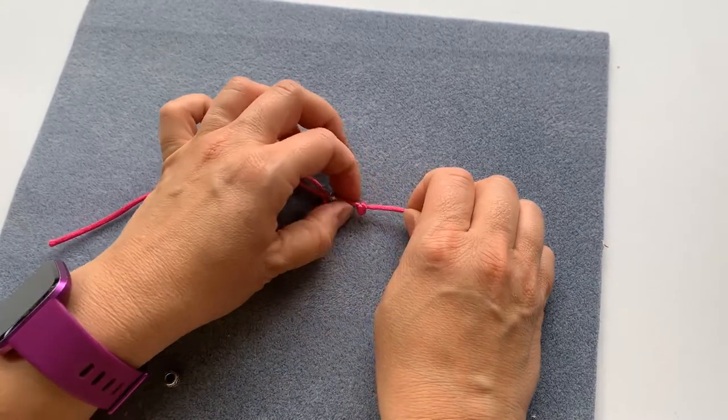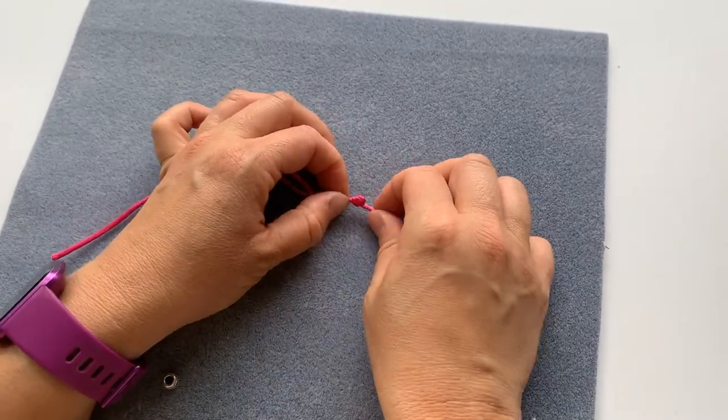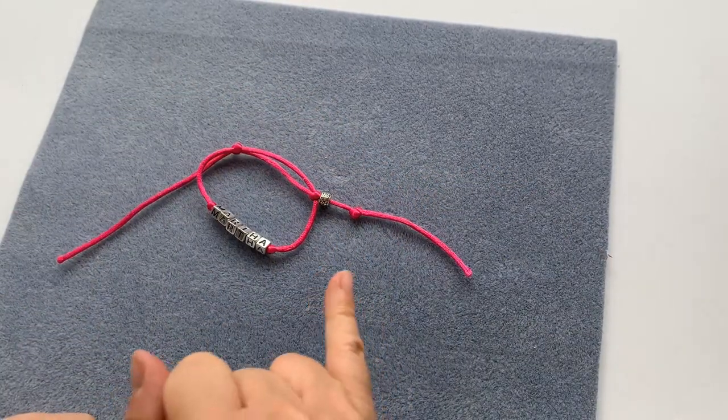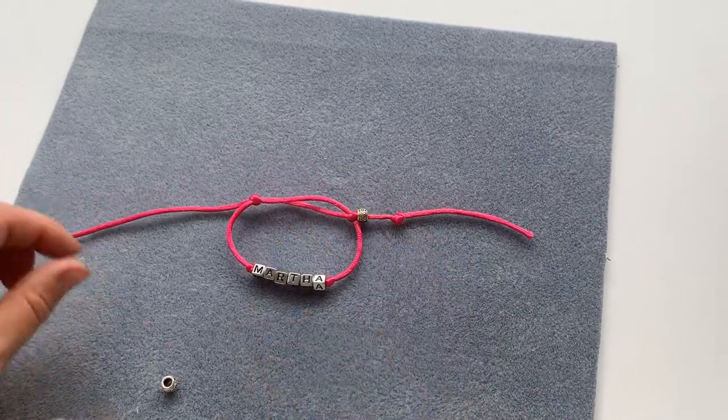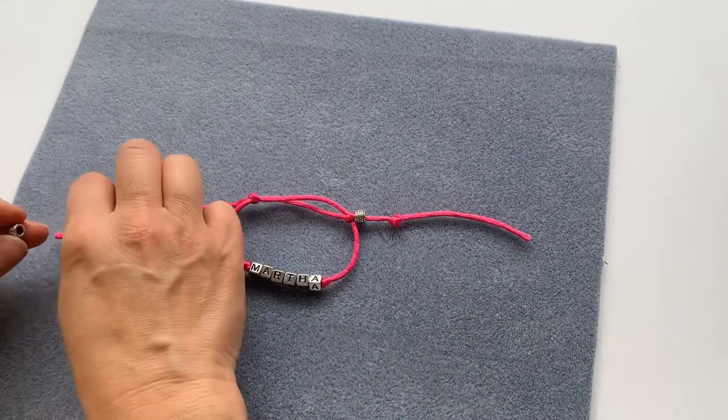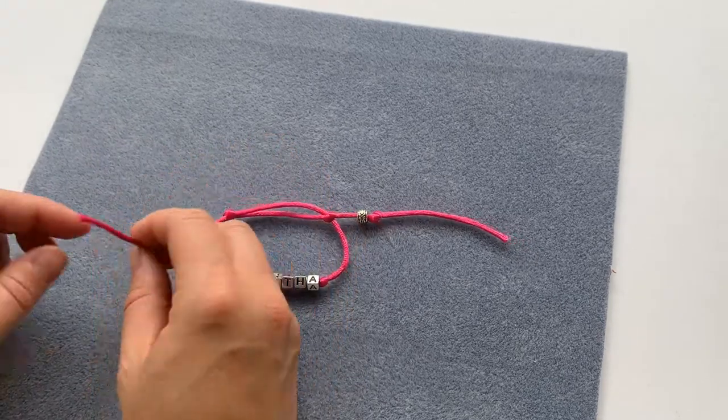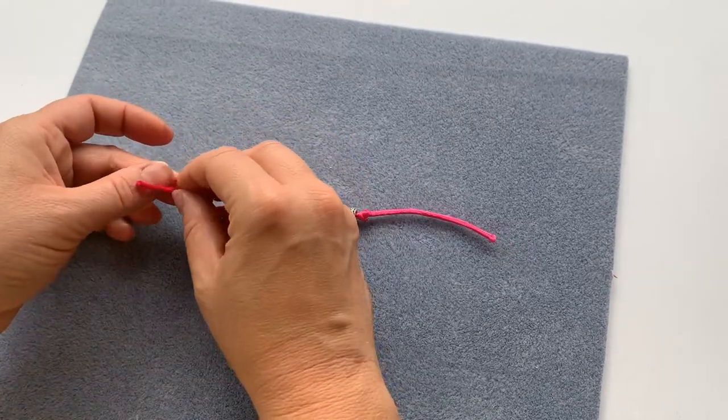You don't have to do this, one could be enough, or you can tie one and then add some glue or clear nail varnish over it to help secure it. That's another option for you. So then I'm going to add the other bead to the other end.